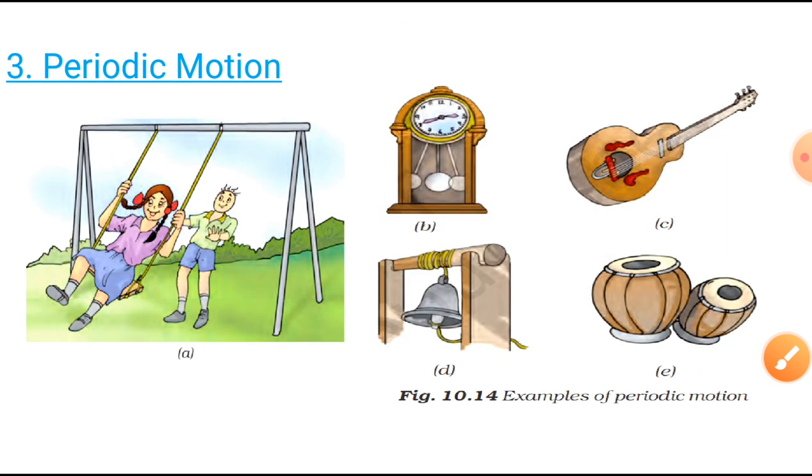And students, it's periodic motion. When an object repeats its motion after some time, this type of motion is called periodic motion. So basically in this motion, the movement will be repeated after a fixed interval of time. Here, you can see some examples.